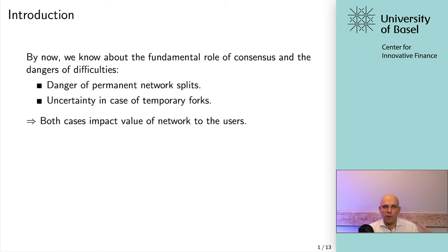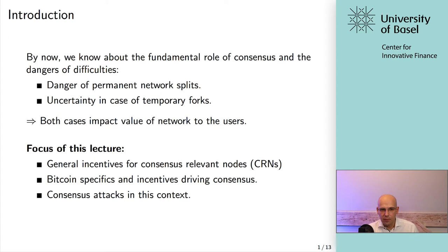We're looking into how these different agents in the network are incentivized and how we can make sure that in the usual case, consensus is reached. The focus of this lecture is the general incentives for consensus relevant nodes — in the Bitcoin case, proof of work miners — as well as consensus attacks and potential attack vectors. I have to say, most of these examples are severe simplifications, just to give you the intuition.